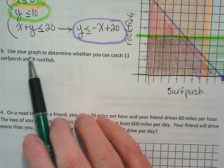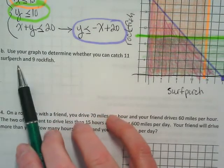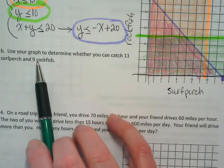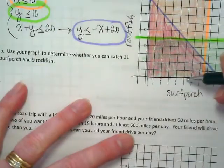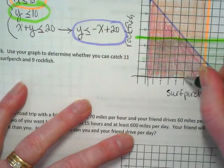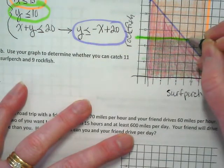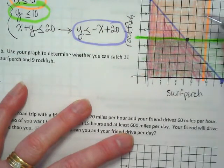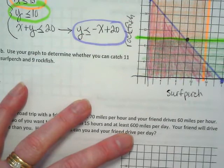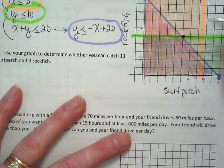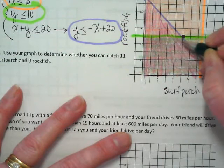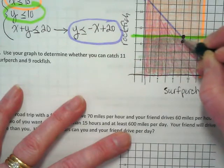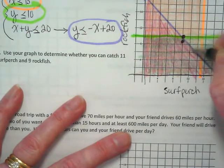We're going to use our graph to determine if we can catch 11 surfperch and 9 rockfish. So I'm going to go over to 11 and up to 9. To be honest, it's kind of hard to tell. Oh wait, I just put 11 at 10. Here's 11, 9. I forgot this was going by 2's. So this seems to be just underneath that line, doesn't it?